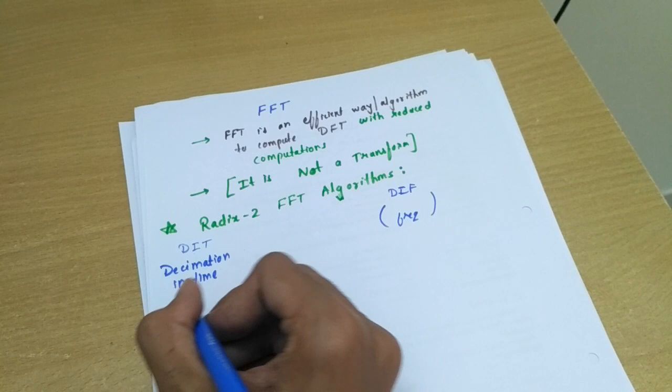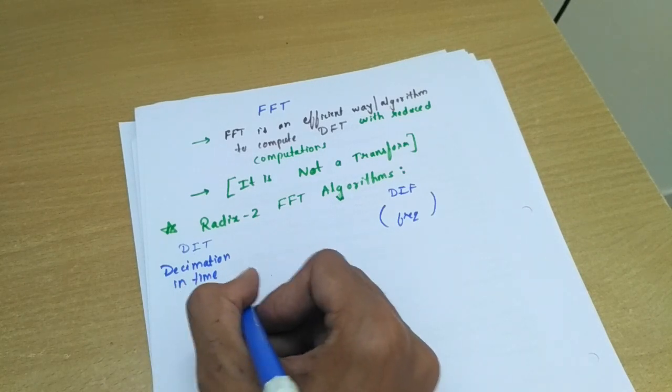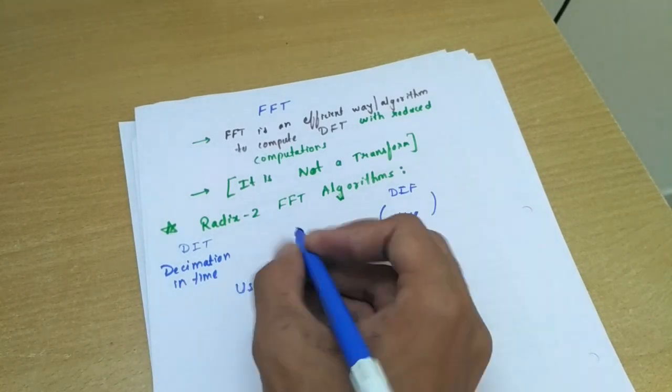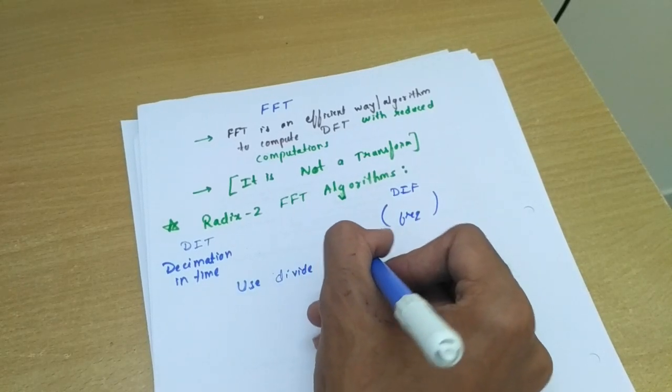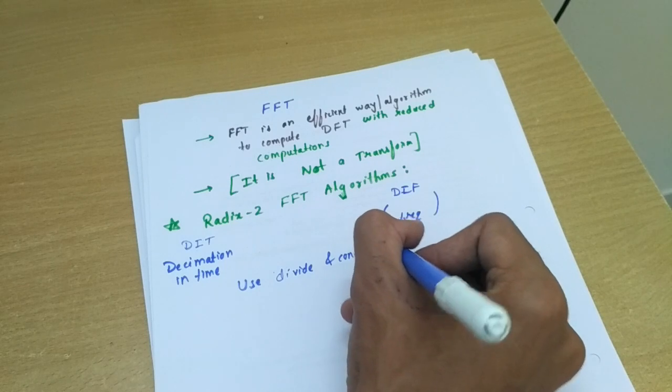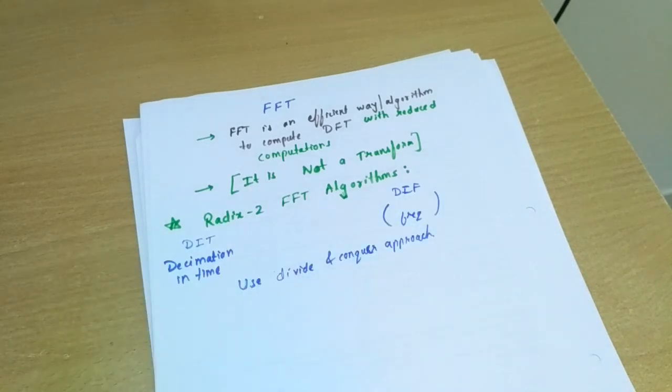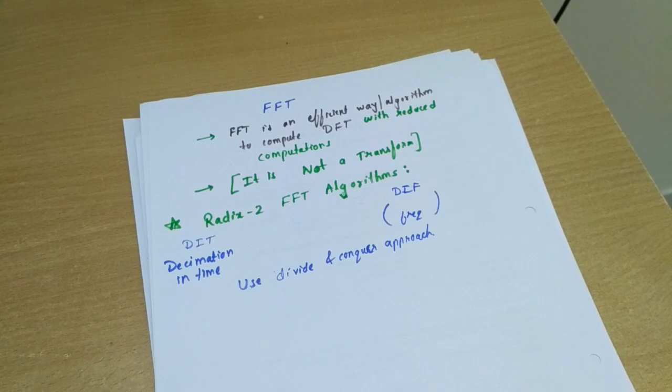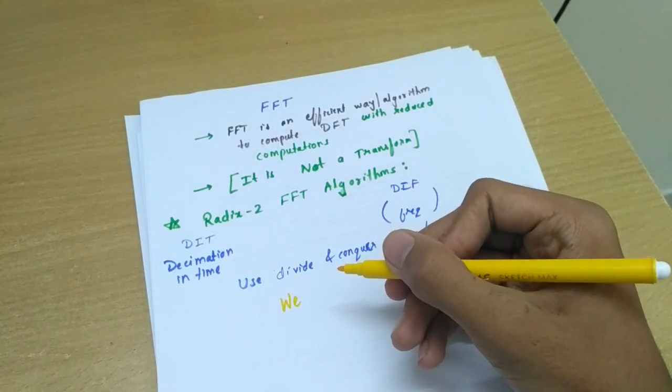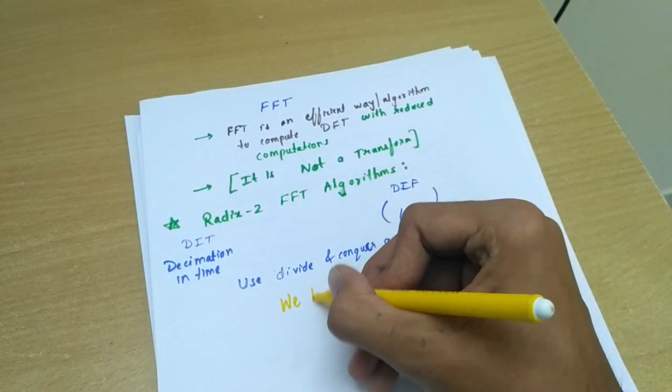Both these algorithms use divide and conquer approach. Now the approach is possible if we choose the signal length N such that, so what is the approach? The basic approach is that we have to choose the signal length N such that it can be factored.